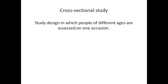Next is the cross-sectional study. In a cross-sectional study, people of different ages are assessed at one time. For example, in one cross-sectional study, researchers asked three-year, four-year, six-year, and seven-year-old children about the state of someone's mind. There was a striking increase with age in the children's awareness of mental processes, strongly suggesting that as children become older, their understanding of mental processes improves.